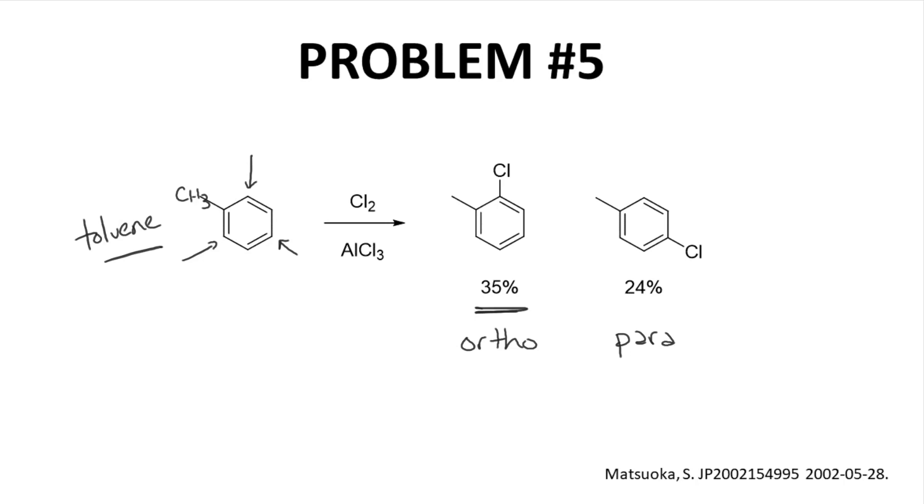Despite this experimental result, which clearly shows that ortho products can form and are experimentally observed, I would still encourage students to focus on the para product. Because normally, para is the major regioisomer, and often the major regioisomer by a large margin. In this particular case, however, ortho dominates. That's likely because the methyl group is actually quite small. Sometimes seeing exceptions to a rule can help one learn more about the limitations of the rule and better understand chemical reactions.